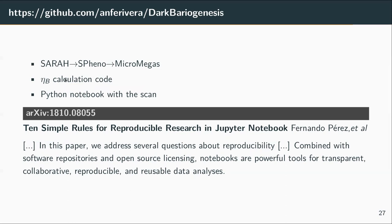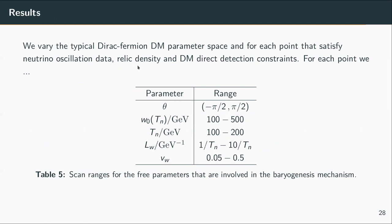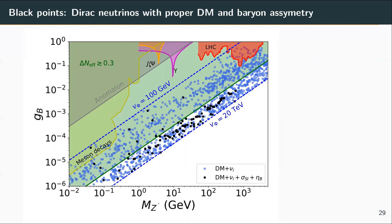We also have one specific code to calculate the baryon asymmetry in a corresponding Python notebook where we make the scan. We tried to make these notebooks reproducible and self-contained. The idea with the scan is that we vary the parameters related to the effective potential in order to have proper nucleation temperatures and to reach the proper values of the baryon asymmetry. These need to be combined with all the other constraints on the several parts of the phenomenology.